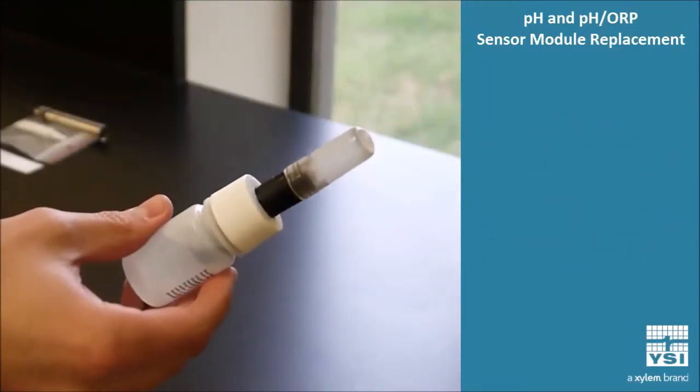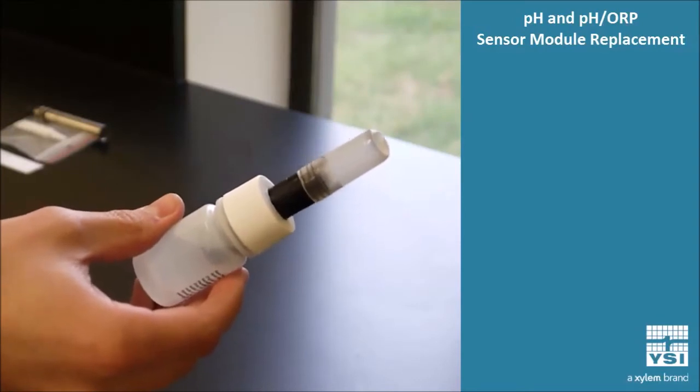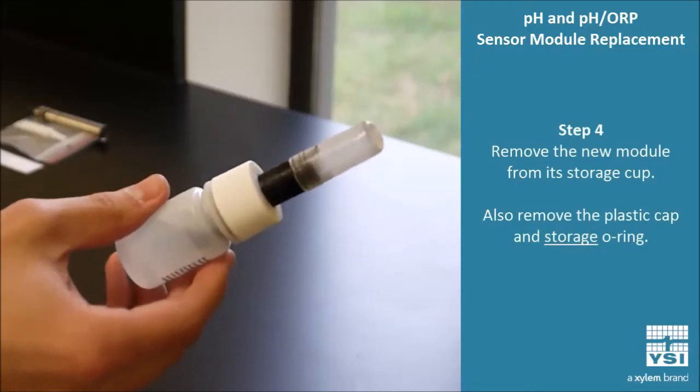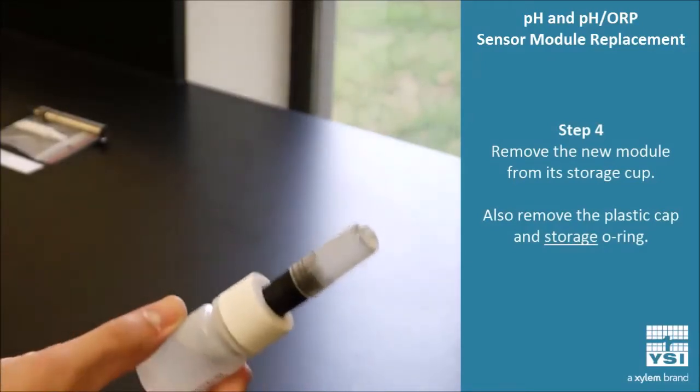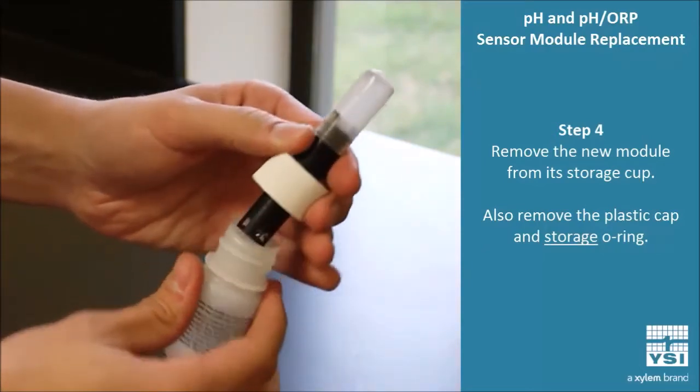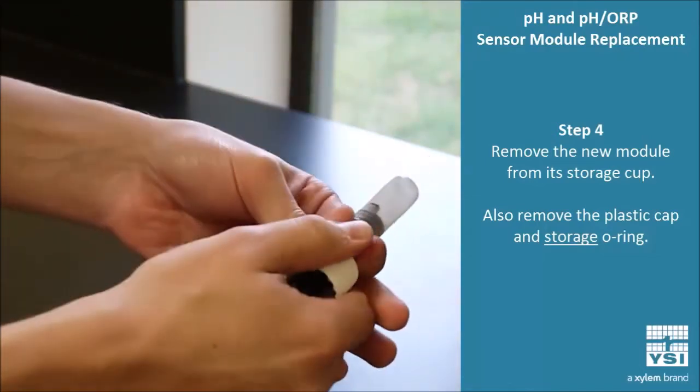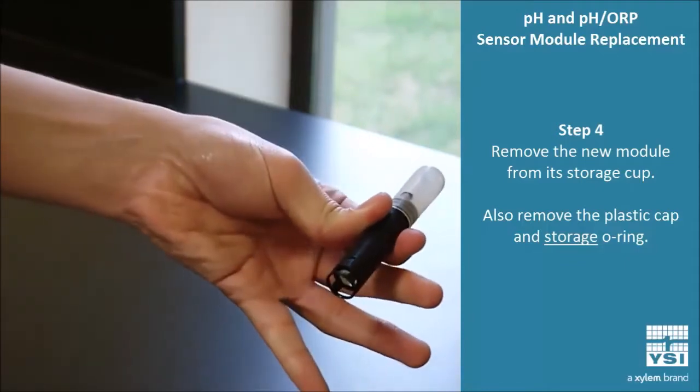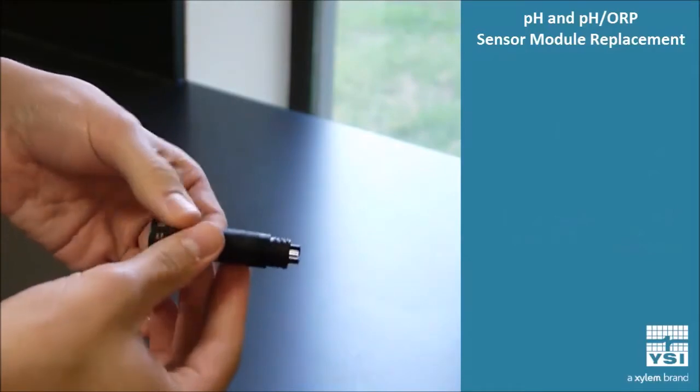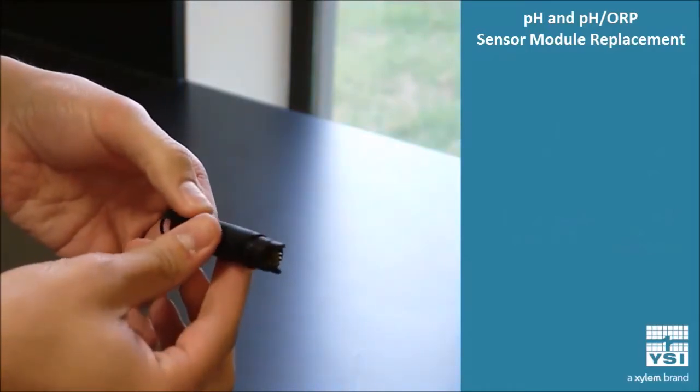Now that we've uninstalled the old module, let's install the new one. Step four is to inspect the new module that came with your kit. It should look something like this. You'll want to remove it from its storage housing. Remove all the caps, all the extras, and you should have something that looks very similar to this.